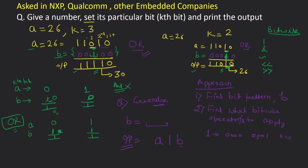If k equal to 3, we want the 1 to be placed at the third bit position, giving the pattern 0 0 1 0 0. That means we need to left-shift 1 by two positions — which is k minus 1 times. Similarly, if k equal to 2, we left-shift 1 by one position. So in general, b equals 1 left-shifted by k minus 1, and then we apply bitwise OR on a and b to set the kth bit.